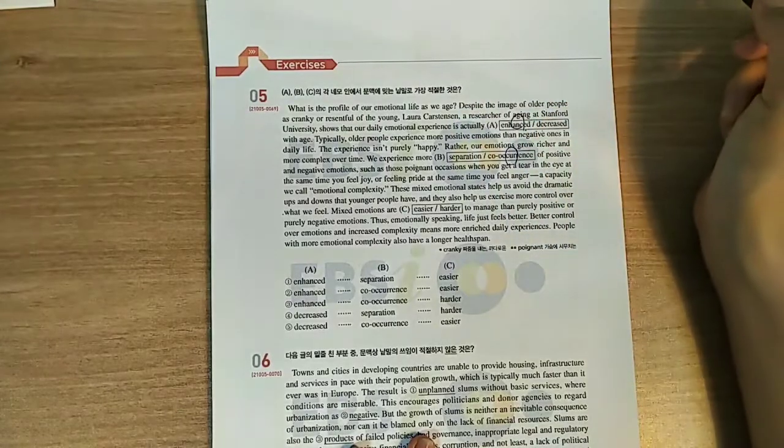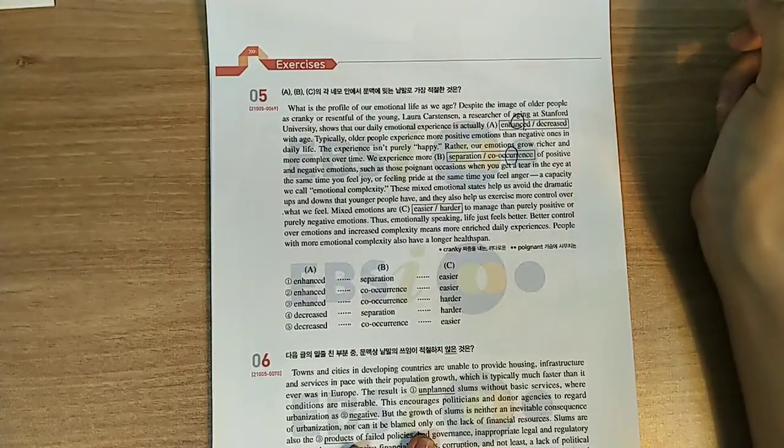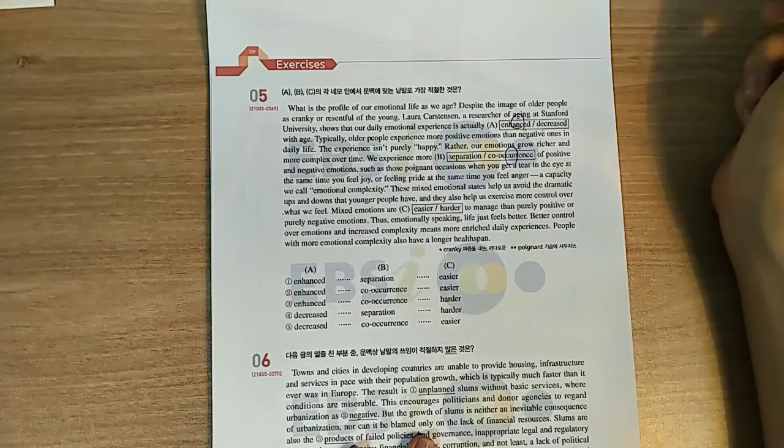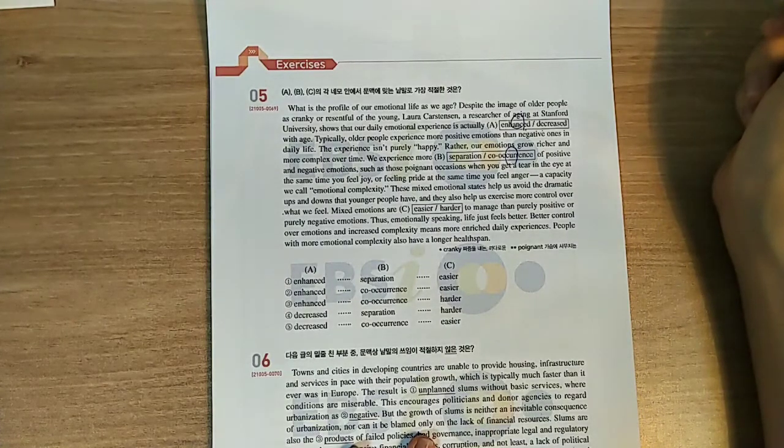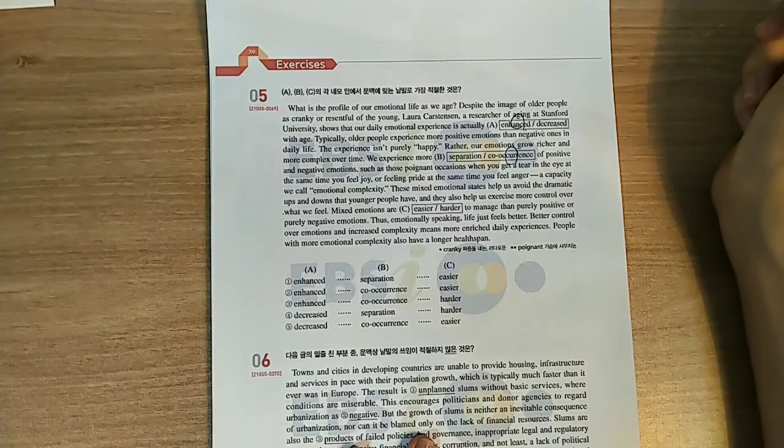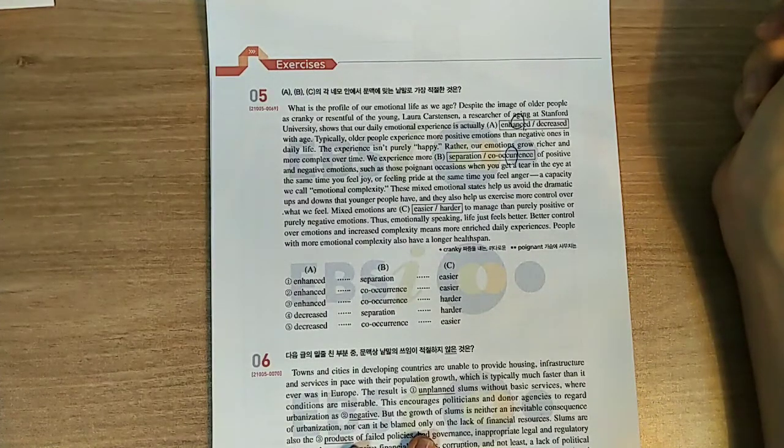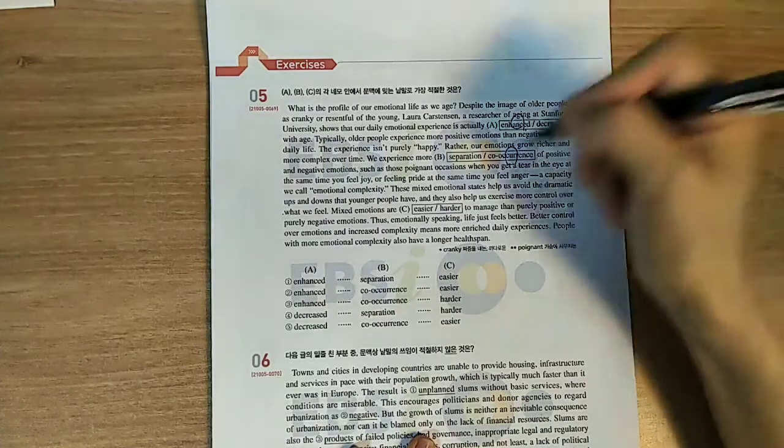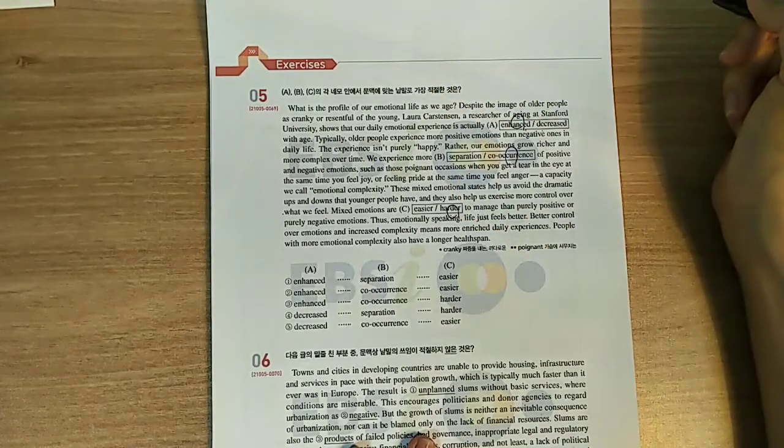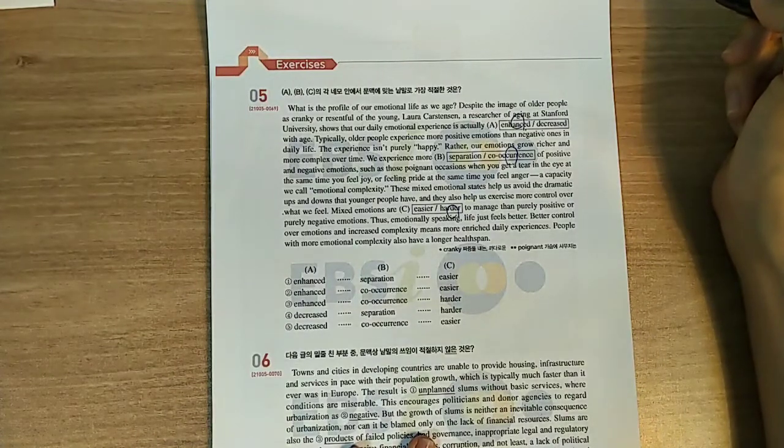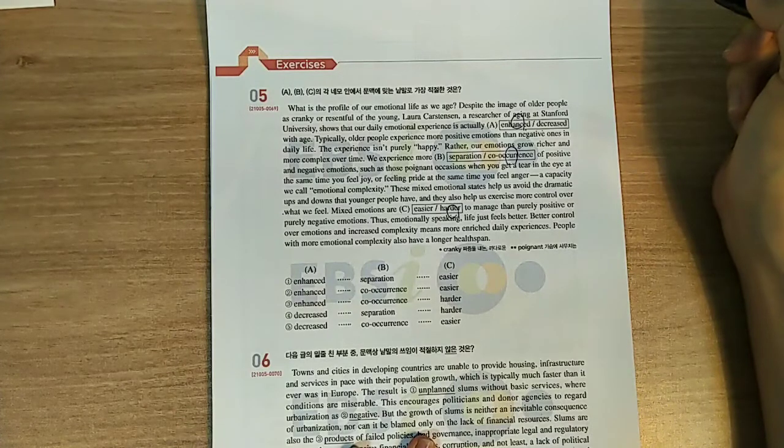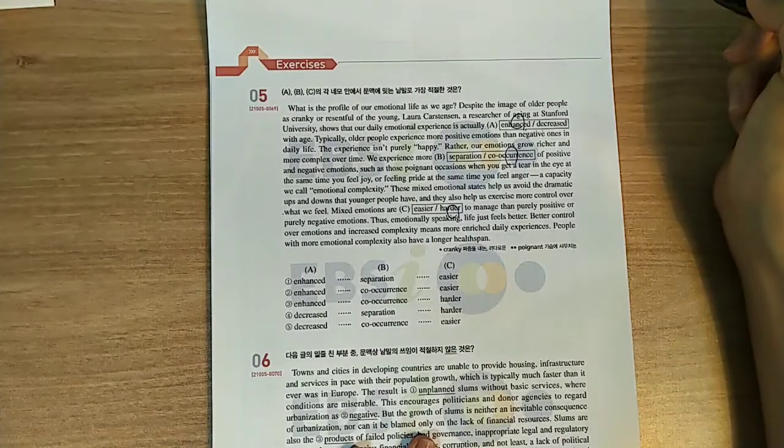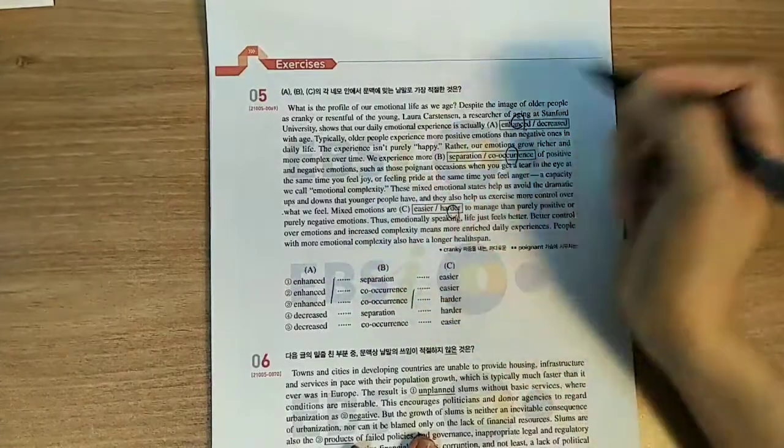We experience more co-occurrence of positive and negative emotions, such as those poignant occasions when you get a tear in the eye at the same time you feel joy, or feeling pride at the same time you feel anger, a capacity we call emotional complexity. This mixed emotional state helps us avoid the dramatic ups and downs that younger people have, and they also help us exercise more control over what we feel. Mixed emotions are harder to manage than purely positive or purely negative emotions. Thus, emotionally speaking, life just feels better. Better control over emotions and increased complexity means more enriched daily experiences. People with more emotional complexity also have a longer health span.